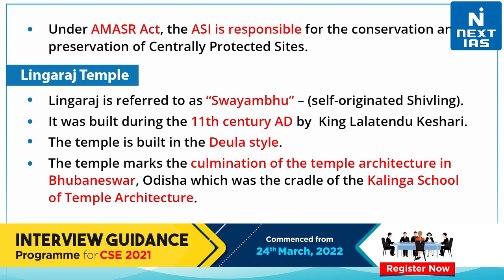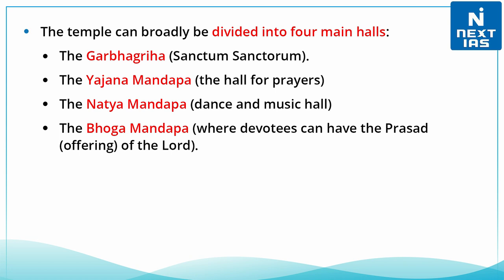The temple can be broadly divided into four main halls. The first is the Garbhagriha, that is the innermost hall or sanctum sanctorum of the temple. Then we have the Yajna Mandapa, the hall of prayers; the Natya Mandapa, or the dance and music hall; and the Bhog Mandapa, where devotees can have the Prasad or offering of the Lord.